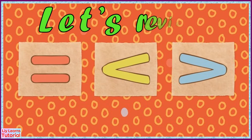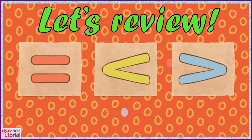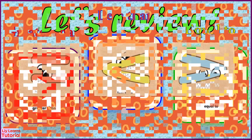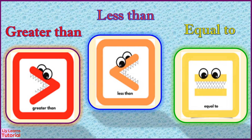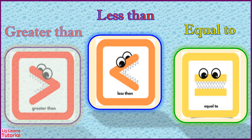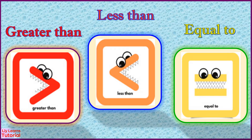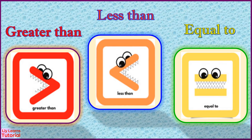Let's review! We use three different signs to compare numbers. They are: greater than, less than, and equal to.